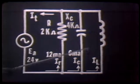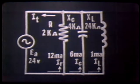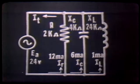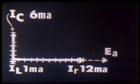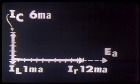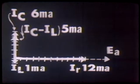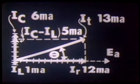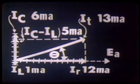Our third current, IL: assuming an inductive reactance of 24k ohms with 24 volts applied, by Ohm's law we have 1 milliamp of current. IL lags IR by an angle of 90 degrees, and is 1 unit long. Since IL and IC are 180 degrees out of phase, IL can be subtracted from IC, leaving a vector sum of 5 milliamps. We can now construct our parallelogram and draw in our total current vector IT. Measuring the magnitude of IT, it measures 13 units long, representing a total current of 13 milliamps.